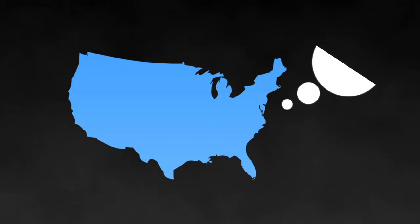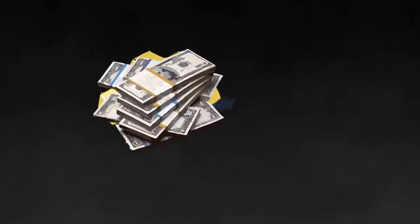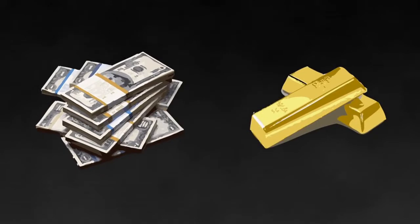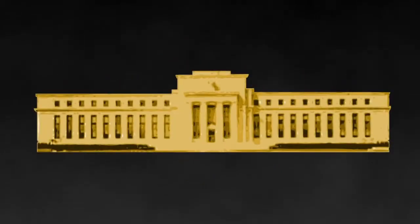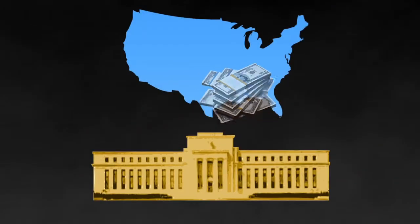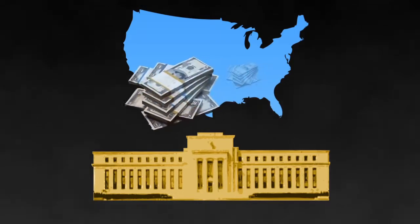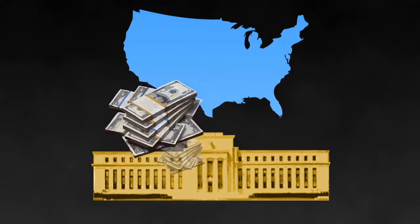Let's say the United States needs money. Instead of issuing their own United States notes backed by their own credit, they issue treasury bonds. They then sell these bonds to the Federal Reserve, which buys them with money they created out of thin air. The money that the Fed created then goes to the U.S., which then pays interest on the money that the Fed lent to the Treasury.